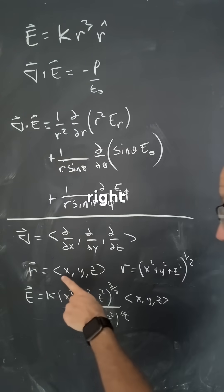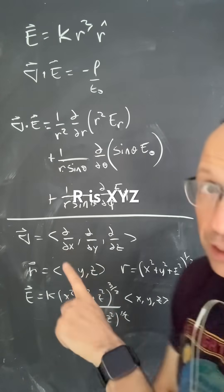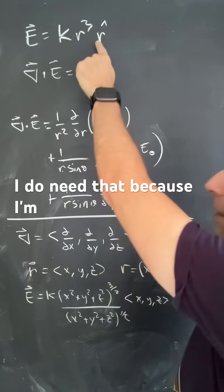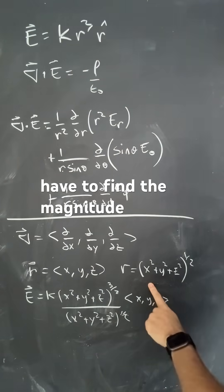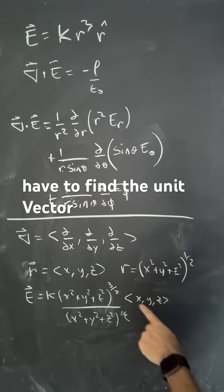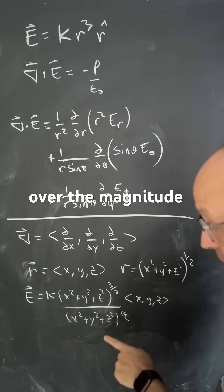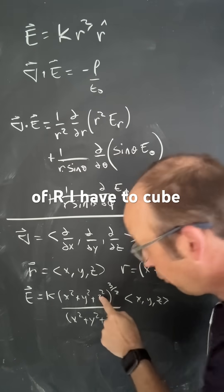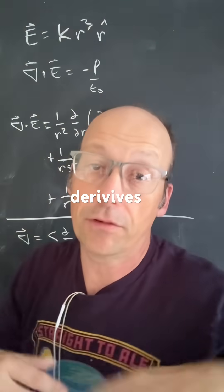The vector r is just (x, y, z). Since I have r̂, I need to find the magnitude of r, then the unit vector r̂ which is r divided by the magnitude of r, then cube that, and then take the partial derivatives.